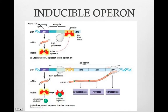Some repressor proteins are active by themselves. In this case, they don't need a co-repressor to bind to them and activate them. Instead, an inducer binds to them and inactivates the repressor. This is an inducible operon.